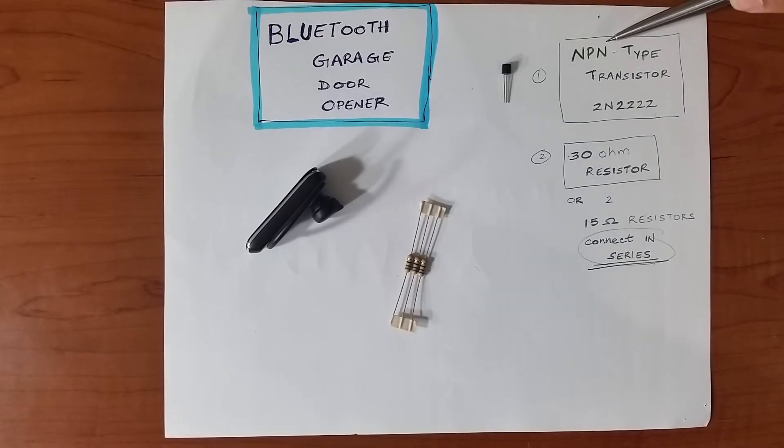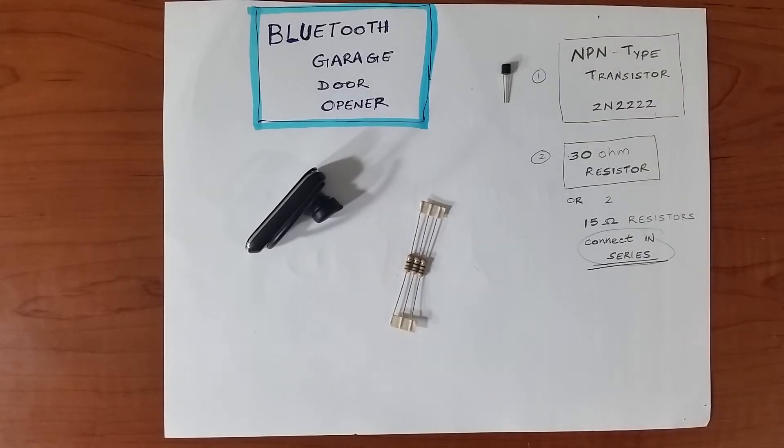Also, the NPN here stands for negative, positive, negative. You got to get these same exact ones. And these are the 15 ohm resistors that I got.